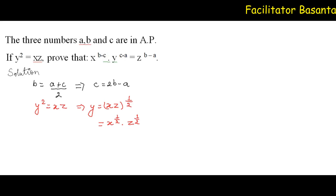Now see what we need to prove: X to the power B minus C, dot Y to the power C minus A, equals Z to the power B minus A.